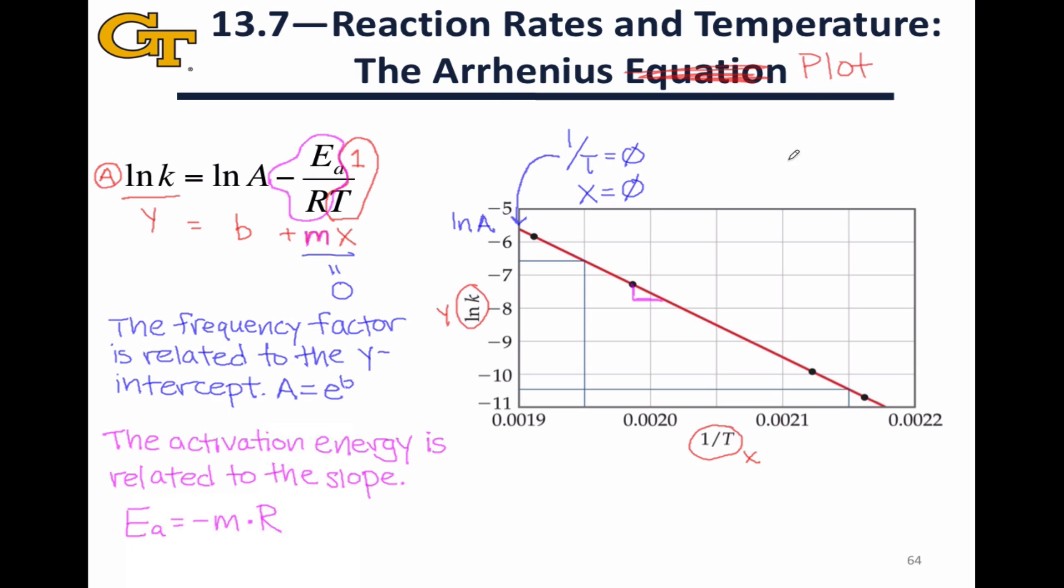To summarize, the beauty of an Arrhenius plot is that we can collect data of the rate constant as a function of temperature, both of which are easily measurable from experiment by measuring the rate law and measuring the temperature. And from those fairly easily measurable quantities, we can get to quantities which are much more difficult to measure, namely the frequency factor and the activation energy, which have a lot of theoretical value but can't be measured directly.